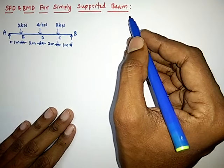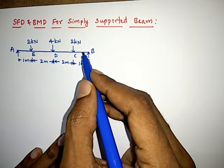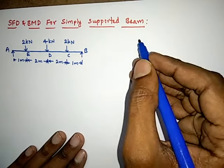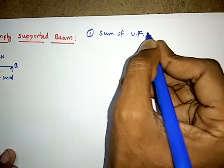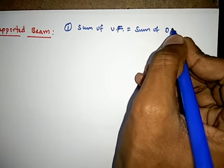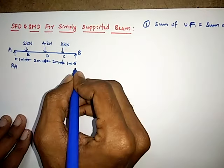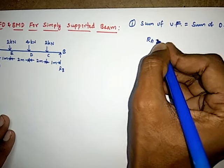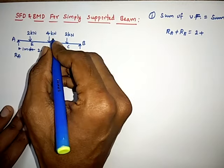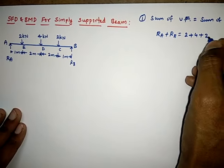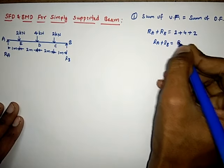To calculate reaction forces, the beam must be in equilibrium under the action of forces and moments. The first condition is that the sum of upward forces must equal the sum of downward forces. The upward forces are Ra and Rb, so Ra + Rb = 2 + 4 + 2 = 8 kN. This is equation number one.